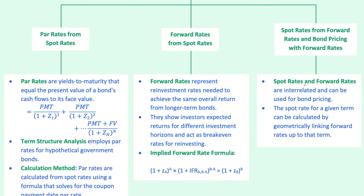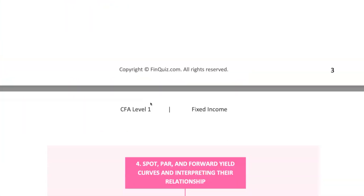Forward rates are derived from spot rates and represent expected future interest rates between different time periods, crucial for investors planning their investment horizon. They indicate the reinvestment rates that would equate the return of investing in a series of shorter-term bonds with a single longer-term bond. Spot rates for any term can be derived by geometrically linking forward rates covering the same total period — for example, a two-year spot rate can be obtained by compounding the one-year spot rate with the one-year forward rate. This method allows investors and analysts to construct or deconstruct the yield curve, providing a detailed view of expected future rates and helping in pricing bonds more accurately.